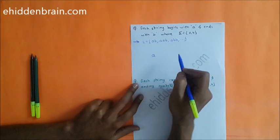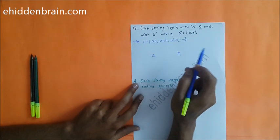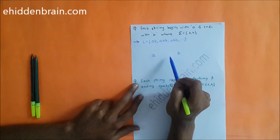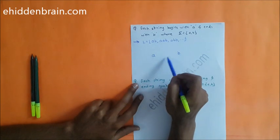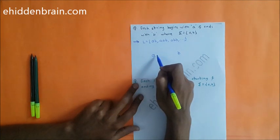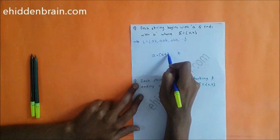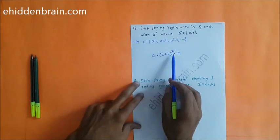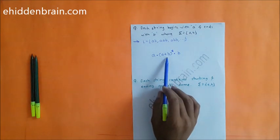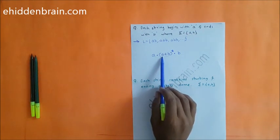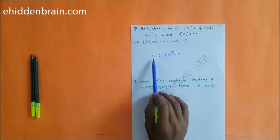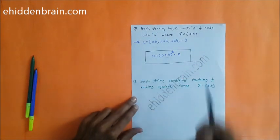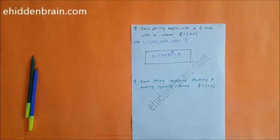'a' will be the first symbol and 'b' will be the last symbol. In between, I want anything — any string of a's and b's — because it starts with 'a' and ends with 'b', and in between I'm not worried about what comes. That something part means any string is possible, and any string of a's and b's is denoted by (a+b)*. So the starting symbol is 'a', ending symbol is 'b', and this is the final regular expression: a(a+b)*b.